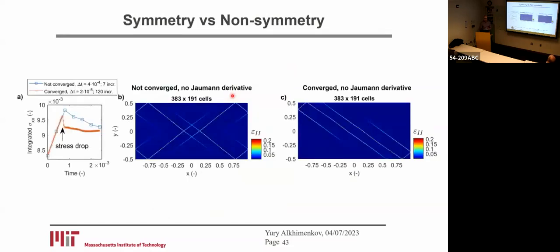Now let's talk about symmetry versus non-symmetry. In the middle, you can see the invariant of the strain tensor. If the simulation is not converged, then it is symmetric. But if the simulation is fully converged and resolved, the pattern is non-symmetric.